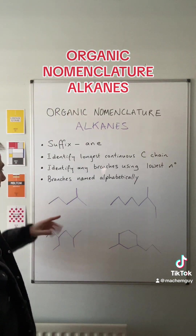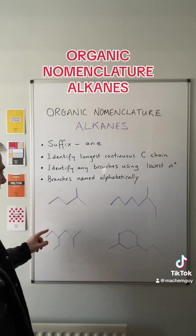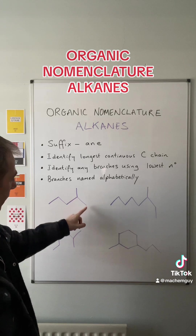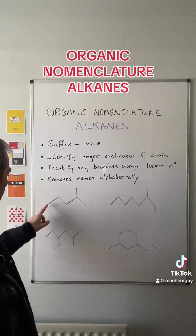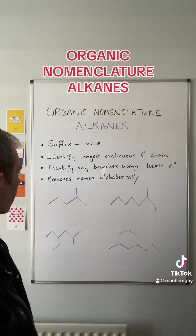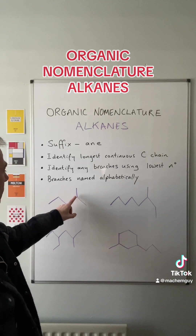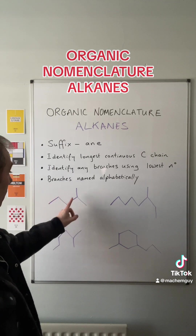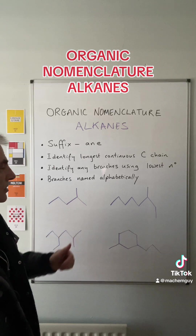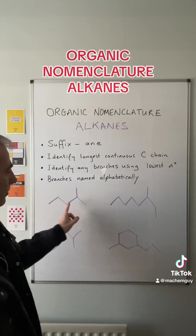Applying those rules to the first example: the longest continuous carbon chain is one, two, three, four, five — just checking the other way, one, two, three, four, five — so the longest chain is five, giving us pentane. We have a branch, and it's on carbon number two counting from the lowest end, so this is 2-methylpentane.